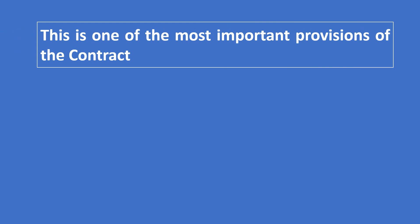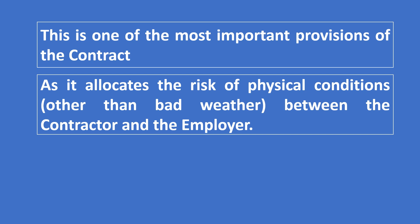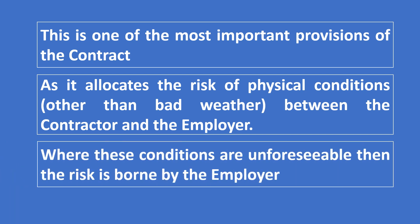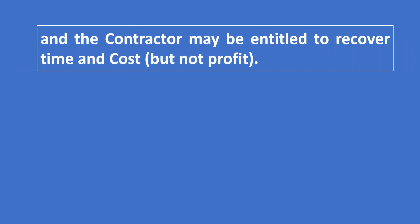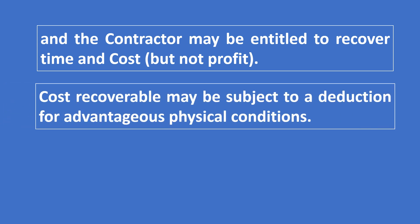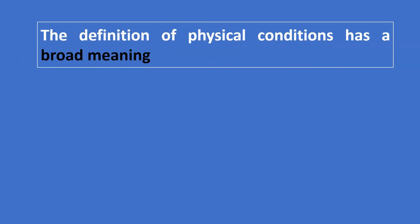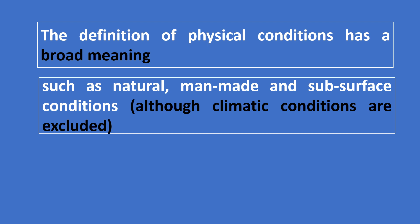This is one of the most important provisions of the contract as it allocates the risk of physical conditions - other than bad weather - between the contractor and the employer. Where these conditions are unforeseeable, the risk is borne by the employer, and the contractor may be entitled to recover time and cost but not profit. Cost recoverable may be subject to deduction for advantageous physical conditions. The definition of physical condition has a broad meaning, such as natural, man-made and subsurface conditions, although climate conditions are excluded.